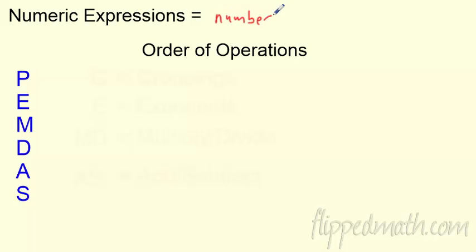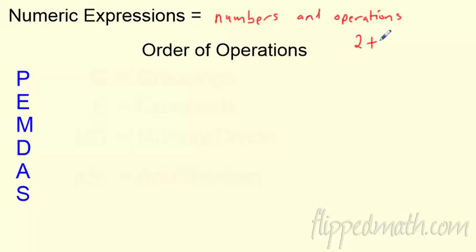Let's jot this down: numbers and operations — add, subtract, multiply, divide. We've been doing these all year. Things like 2 plus 3, or 4 divided by 5. Anything that has a number and an operation. Now this is going to get more challenging as we add variables into the mix, but for right now we're going to look at just numeric expressions.